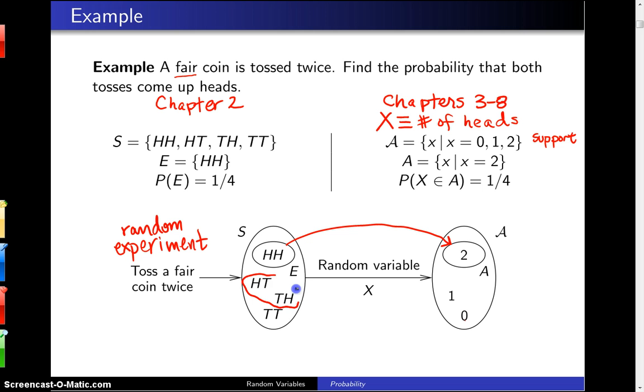And in fact, if you wanted to take these others, they're the two that map to one head, and that right there maps to zero heads. So the sample space is analogous to the support script A, and our event of interest E here maps to the set A.